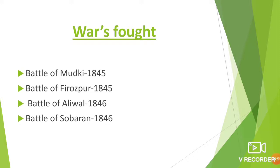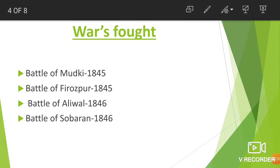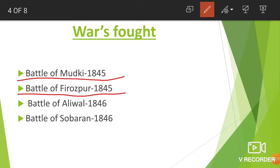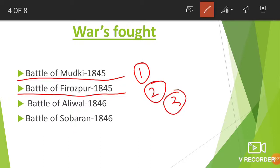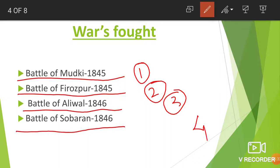In the First Anglo-Sikh War, there were a series of four major battles. The Battle of Mudki was fought in 1845, followed by the Battle of Ferozpur also in 1845. Then came the Battle of Aliwal in the Ludhiana district, and the Battle of Sobraon in 1846.